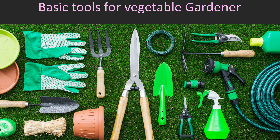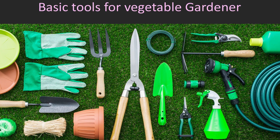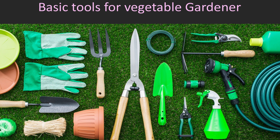A garden hoe is great for removing weeds and cultivating the soil's surface. Depending on the size of your raised bed, you may use a watering can or a hose with a suitable nozzle to provide consistent water to your plants. A wheelbarrow or garden cart makes it easier to transport soil, compost, and other materials to and from your raised bed. Plant markers or labels help identify each crop to avoid confusion during growth and harvesting. A small garden rake is helpful for smoothing and leveling the soil, removing debris, and creating even seed beds for planting.